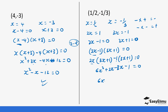So this is 6x squared plus 2x minus 3x. Since 2 is smaller than 3, our answer will be 6x squared minus x minus one equals zero. That is your answer.